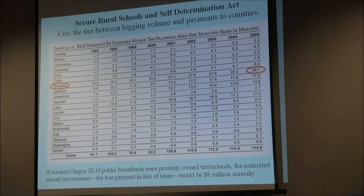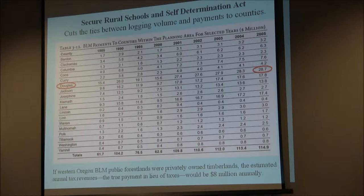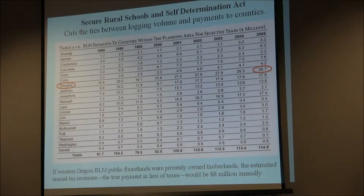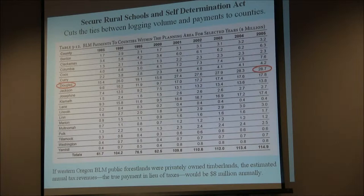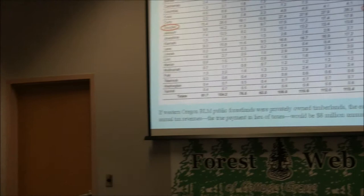Douglas County received almost $29 million in 2005 alone, and all the ONC counties together received about $115 million. Keep in mind this is all in lieu of taxes because counties say they can't tax federal land. But a study determined that if the counties were actually paying taxes as if these were private industrial forest lands, they would get about $8 million a year — not $115 million, and not the $110 million they're asking for now.